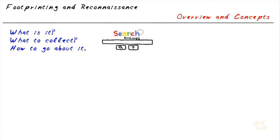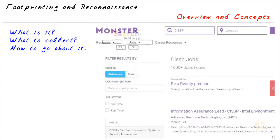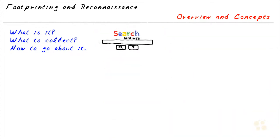We can also do searching on job sites. That may not seem obvious, but if a company is hiring Java programmers, .NET developers, a Novell GroupWise administrator, an Exchange admin, or a Windows Server 2003 administrator, those are dead giveaways that they're actually using those technologies. Footprinting through job sites can be very useful for gathering intelligence on the target. We can also gather information from groups, forums, or blogs associated with or produced by the target.